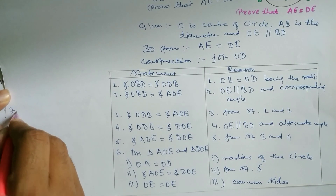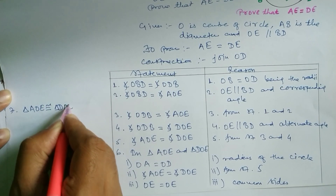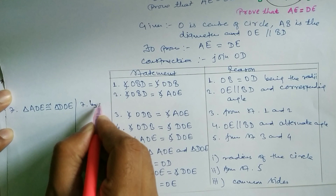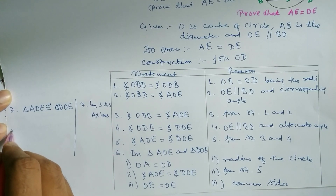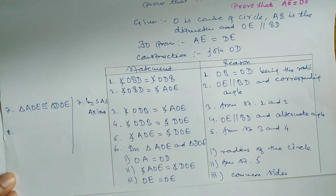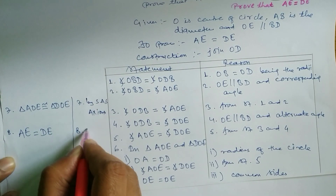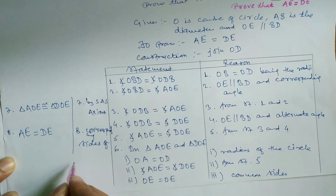Statement 7: Triangle AOE is congruent to triangle DOE by the S.A.S. test. Statement 8: AE is equal to DE. The reason is corresponding sides of congruent triangles.